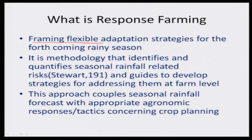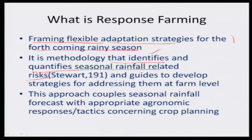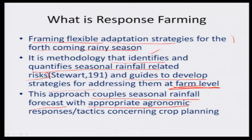One definition is: framing flexible adaptation strategies — 'adaptation' is a very important word — for the forthcoming rainy season. So you are preparing yourself, meeting the challenge from the forthcoming seasons. The second definition is: it is a methodology that identifies and quantifies seasonal rainfall-related risk. In advance, you are able to identify the forthcoming seasonal rainfall risk and develop strategies for addressing them at farm level. The third definition: coupling seasonal rainfall forecast with appropriate agronomic responses.